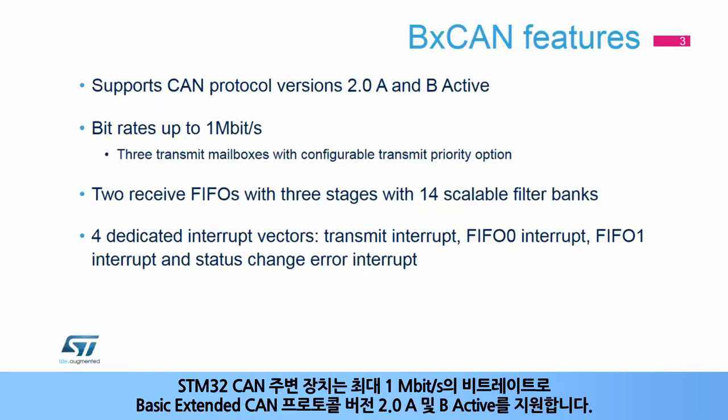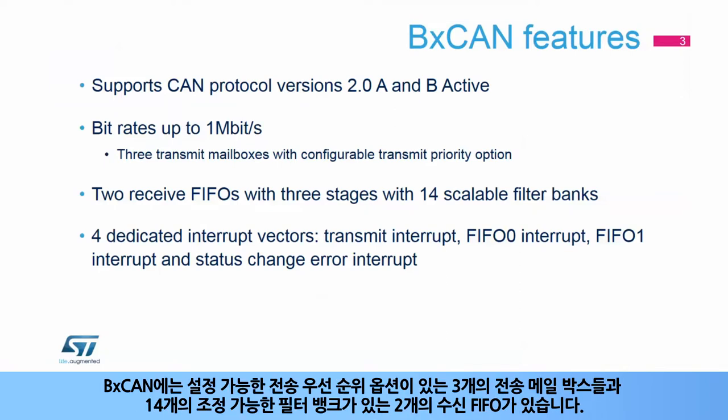The STM32 CAN peripheral supports the basic extended CAN protocol versions 2.0A and 2.0B active, with a maximum bitrate of 1 megabit per second. The BX CAN includes three transmit mailboxes with a configurable transmit priority option, and two receive FIFOs with three stages, with 14 scalable filter banks.